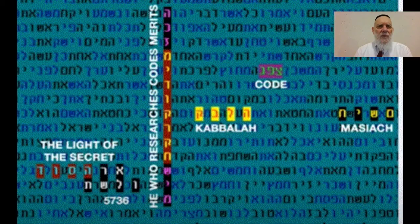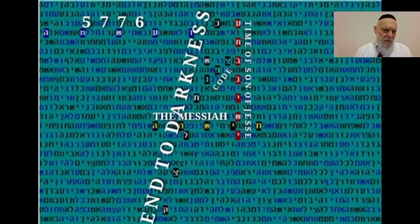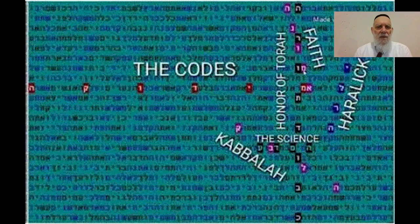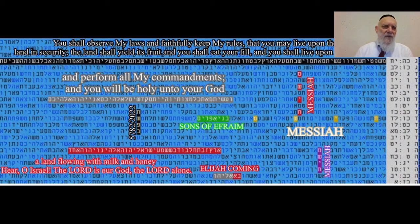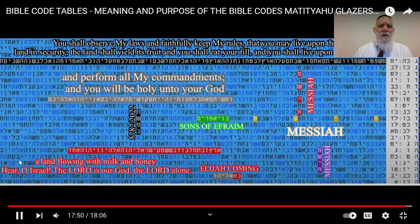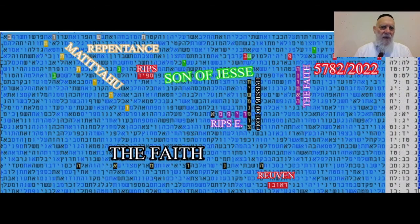These are the tables you saw — you can go into them. These are very statistical, very important, and they go together with a lot of signs that we are very, very close to the time of Messiah. As many codes that I did indicate, we are very close to the time of Messiah. All together — very important Bible code tables about what the Bible codes are.